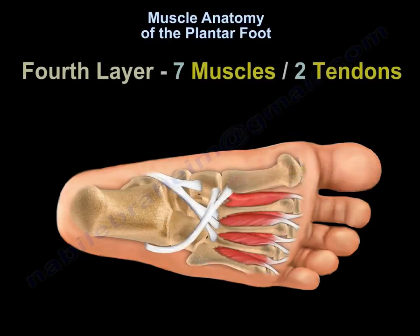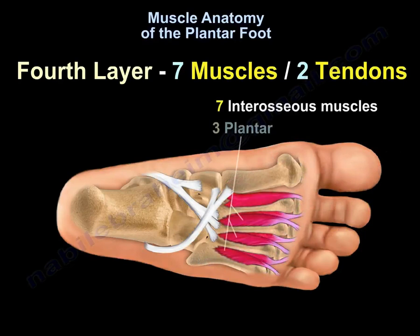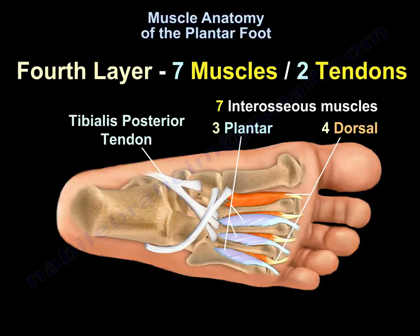The fourth layer has seven muscles and two tendons. The seven interossei muscles consist of three plantar and four dorsal muscles. The two tendons are the tibialis posterior tendon and the peroneus longus tendon.